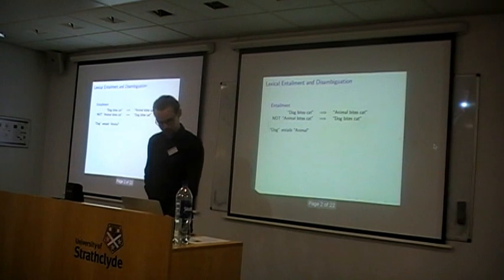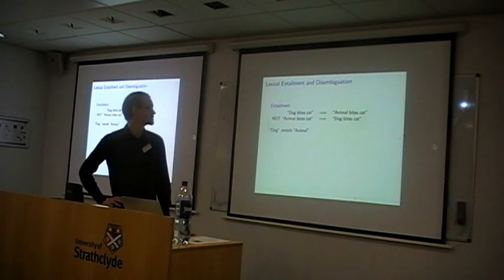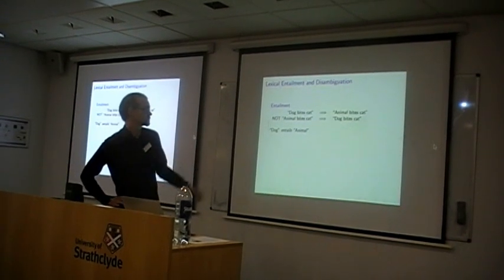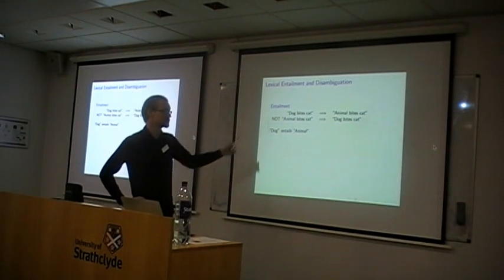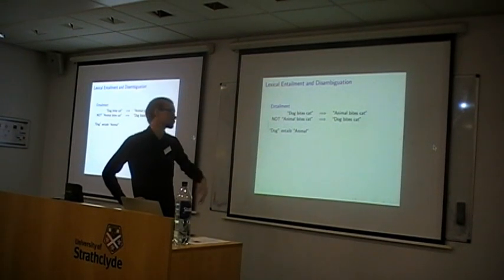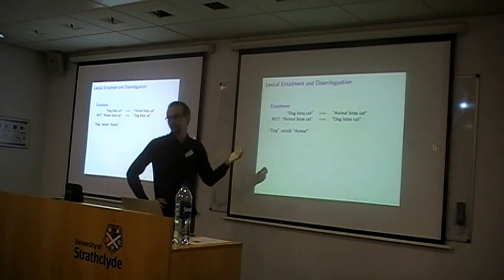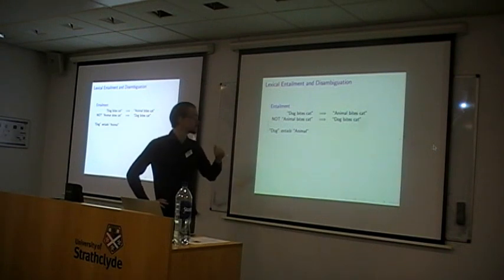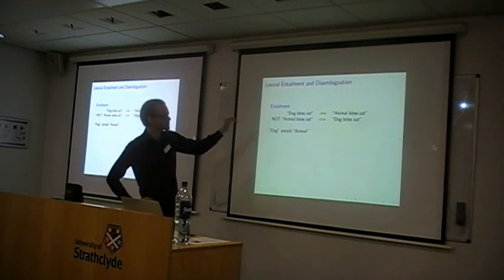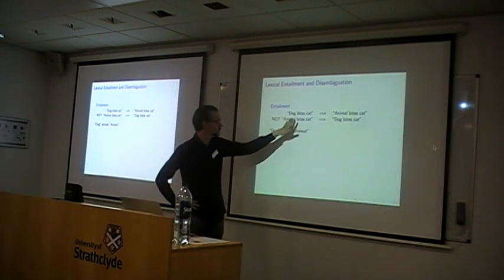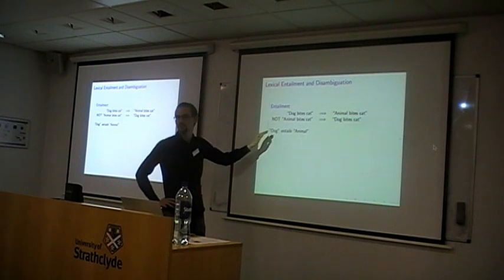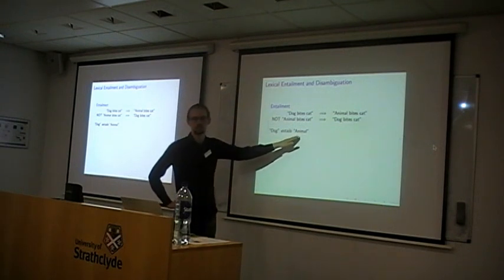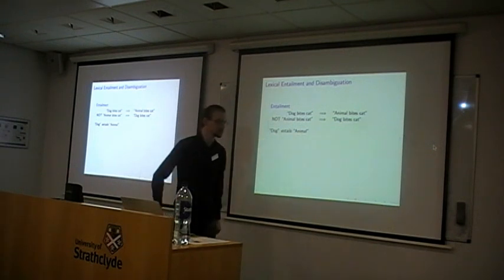We already talked a bit about what entailment and disimplication is. Entailment means that when you have a sentence like 'dog bites cat,' this implies a sentence like 'animal bites cat.' And of course this is not the other way around — this is a fundamentally anti-asymmetric relation. The reason why 'dog' entails that sentence is because 'dog' contains strictly more information than 'animal' and also has comparable information to this.